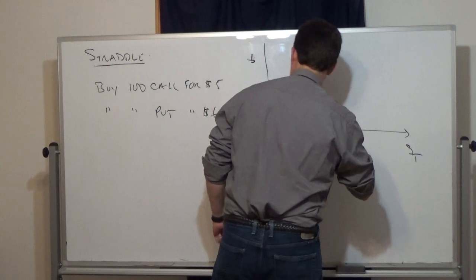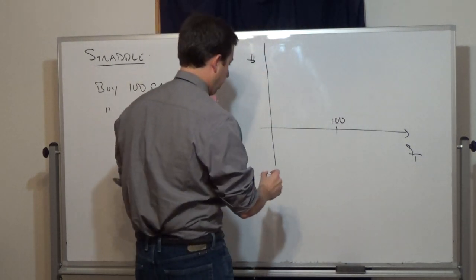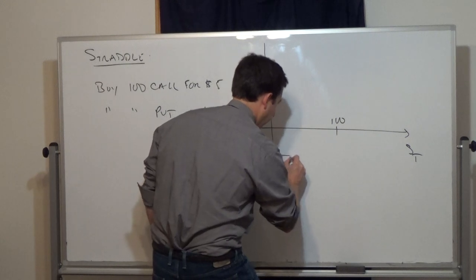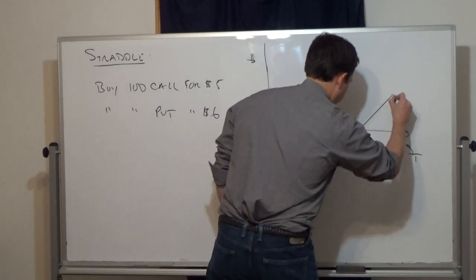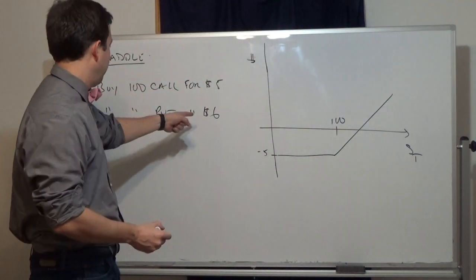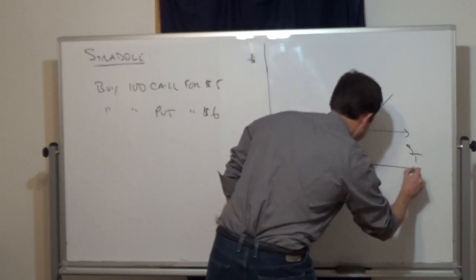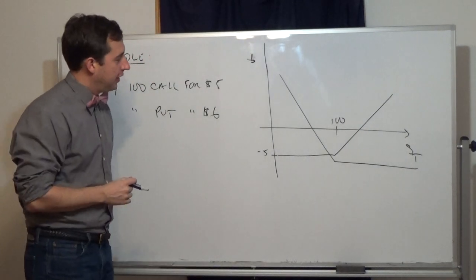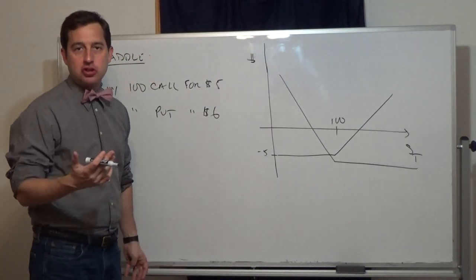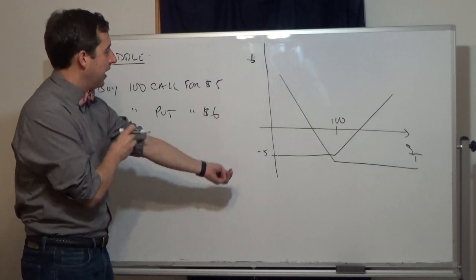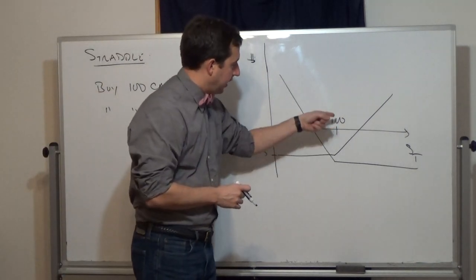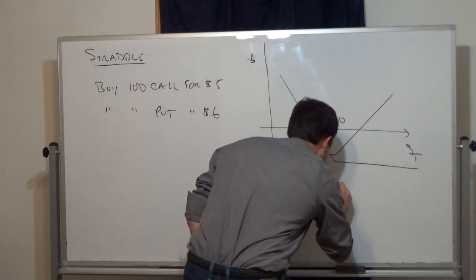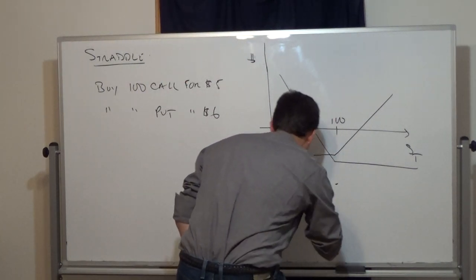We put the $100 strike price here. The profit on the call looks like a standard call diagram; the profit on the put looks like a standard put diagram. For the combined position, it's useful to start at the kink. At expiration with the stock at $100, we lose $5 on the call and $6 on the put, so we lose $11 total.